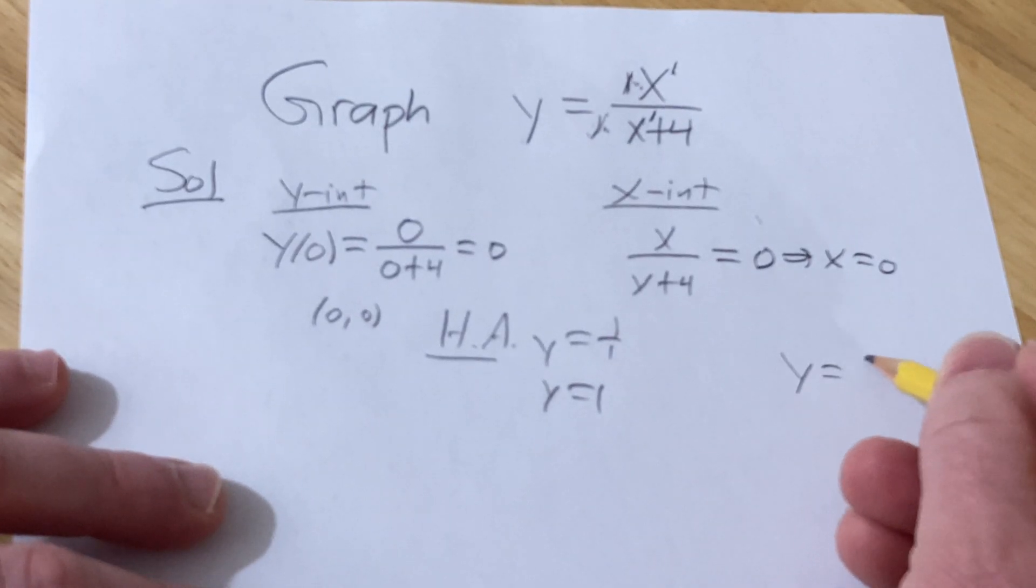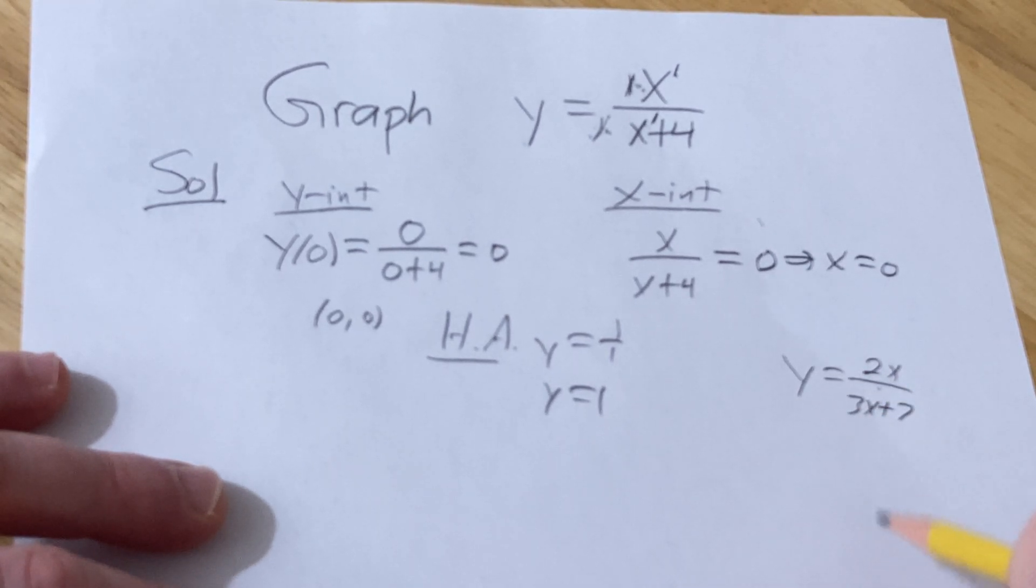So like, just for example, if it was 2x over 3x plus 7, it'd be 2 over 3 in this case. Okay.